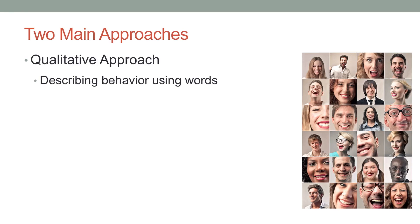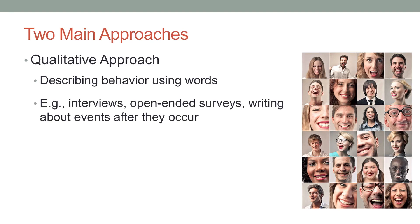Now, the two main approaches that you can take to this type of research — and really any type of research — is either a qualitative approach, in which you're describing the way people act just using plain words. This often accompanies things like interviews, open-ended surveys where they just ask people to perhaps describe their behavior, cognitions, or emotions, or writing about events after they occur.